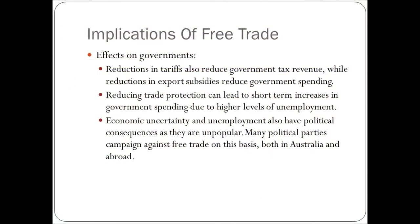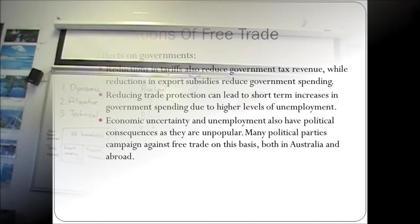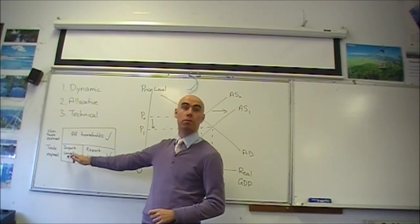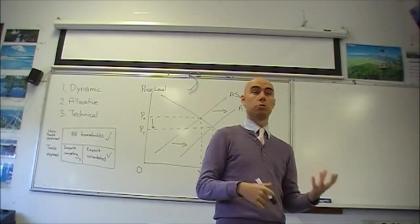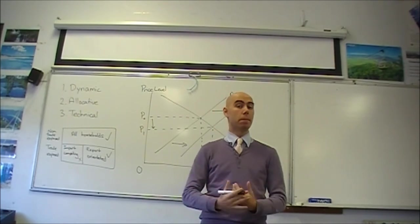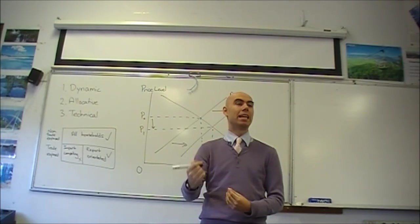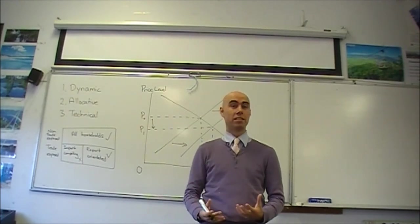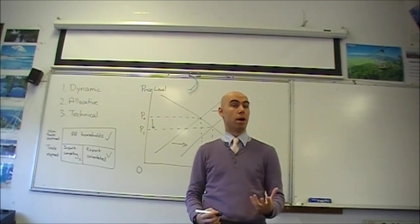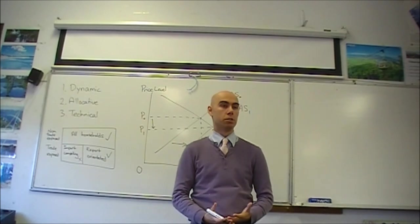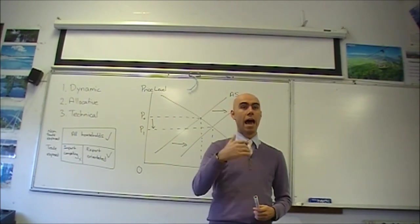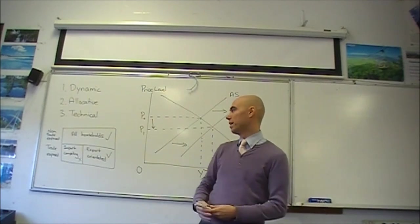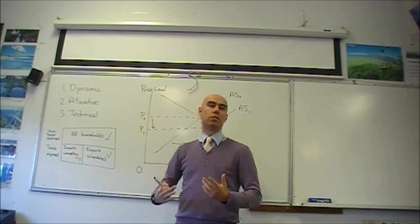And our last point. Economic uncertainty and unemployment also have political consequences as they are unpopular. Let's go back here. It is highly concentrated drawbacks. Those people vote, and they generally vote against these changes. Many political parties campaign against free trade on this basis, both in Australia and abroad. It's important to remember that this happens in other countries as well as Australia. There are a number of political parties, particularly regionally based ones, that will campaign heavily against free trade. A lot of rural independents as well. People like Bob Katter, for example, or Clive Palmer, they often make a big deal about economic populism, as it's often called. Fighting for jobs for Australians by fighting against free trade and economic neoliberalism. And it does tend to be quite popular lines to take. Whereas free trade, because it's very small benefits felt by a large number of people, it tends not to be as much of a vote winner.